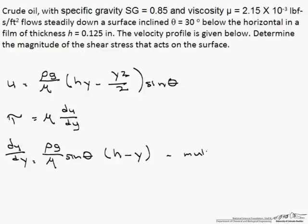So to find the shear stress we multiply this by mu and we get that tau equals rho g sine theta times h minus y. What's interesting about this is because of the velocity profile, the shear stress is completely independent of the viscosity.